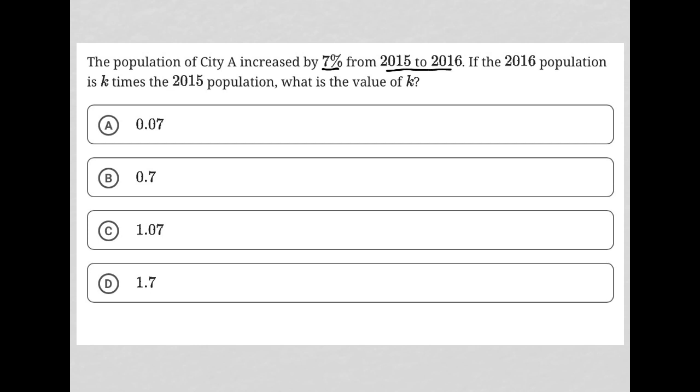So over one year, it increased by 7%. If the 2016 population is K times the 2015 population. All right.